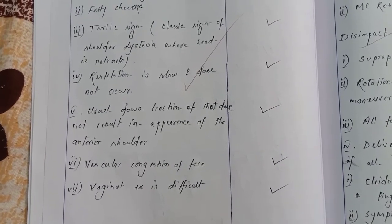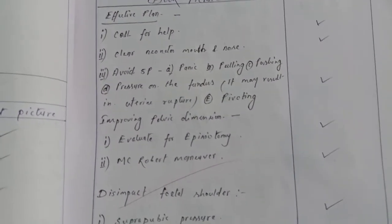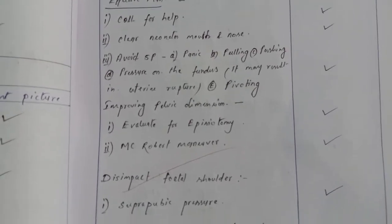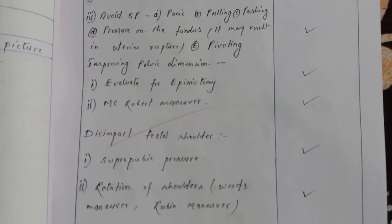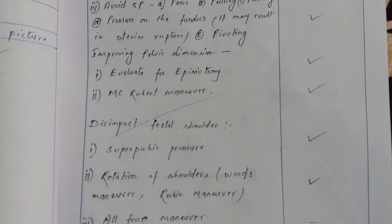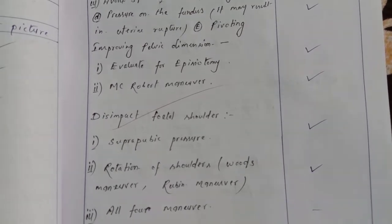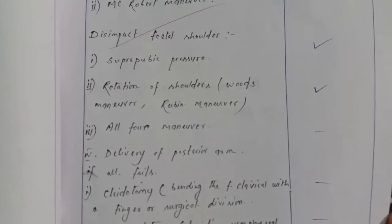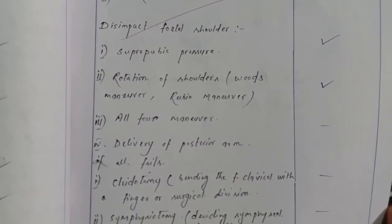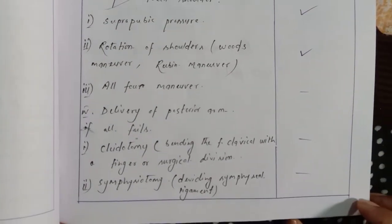Management: call for help, clear neonate's mouth and nose, avoid the 5 P's — panic, pulling, pushing, pressure on the fundus, and pivoting. Improve pelvic dimensions by evaluating for episiotomy, McRobert's maneuver, suprapubic pressure to disimpact the fetal shoulder, rotation of shoulder, all-fours maneuver, delivery of posterior arm. If all fails: cladotomy and symphysiotomy.